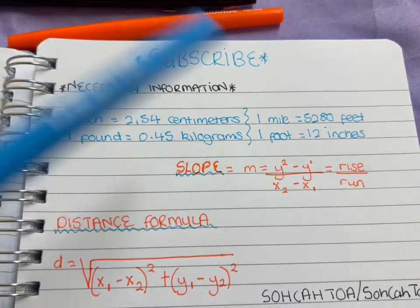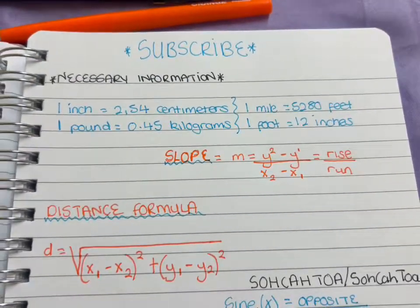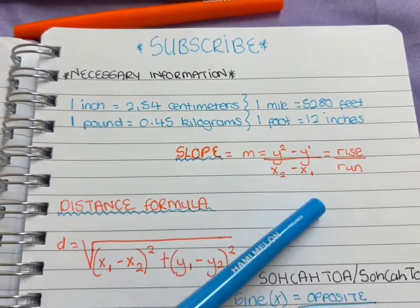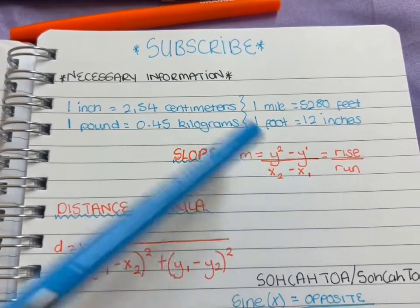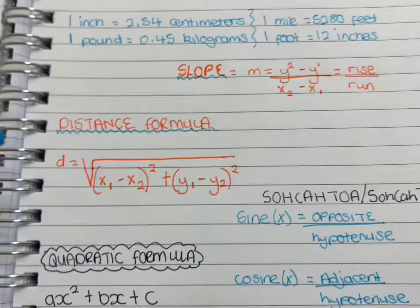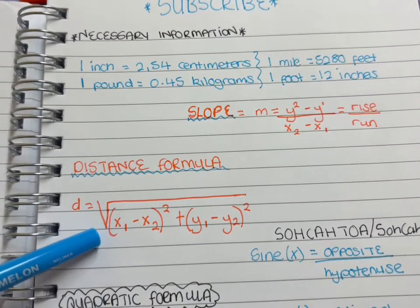The slope—there are different formulas for it. Just go with the easiest one. For me, this was the easiest one. It's so easy because y2 minus y1 over x2 minus x1. It's just kind of easy to remember.